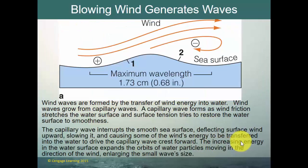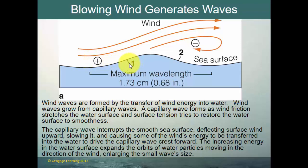Wind waves are formed by the transfer of wind energy into the water and grow from capillary waves. A capillary wave forms as wind friction stretches the water, and surface tension tries to restore it to smoothness. The capillary wave interrupts the smooth sea surface, deflecting surface wind upward, slowing it, and causing some wind energy to be transferred into the water to drive the capillary wave crest forward. The wave flows across flat water, stretches it, pulls it up, and creates this very tiny capillary wave.